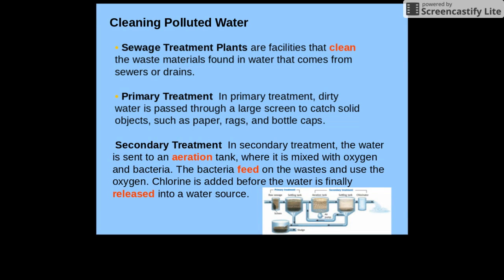Sewage treatment plants are facilities that clean waste materials in water coming from sewers or drains. In primary treatment, the dirty water is passed through a large screen to catch solid objects. In secondary treatment, the water is sent into an aeration tank where it's mixed with oxygen and bacteria — the bacteria feed on the waste and use the oxygen. Chlorine is added before the water is finally released back into the water source.